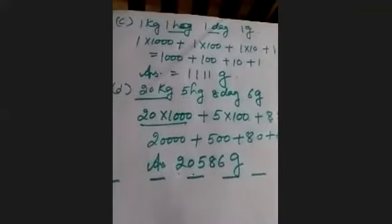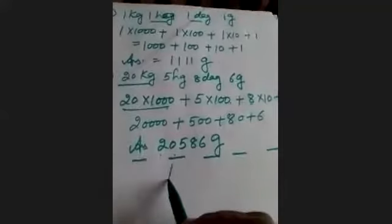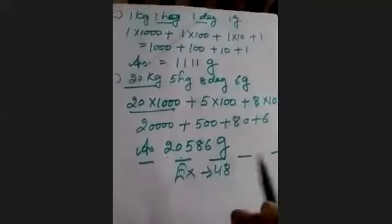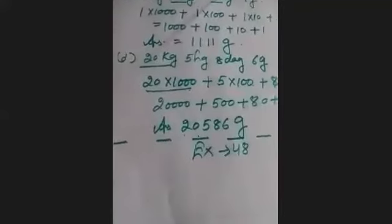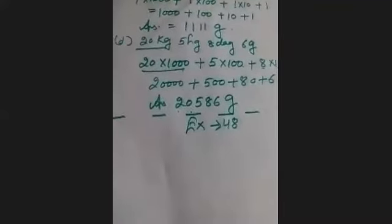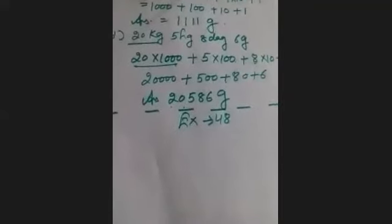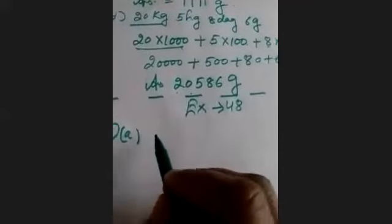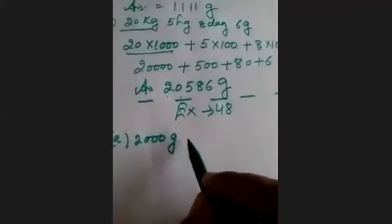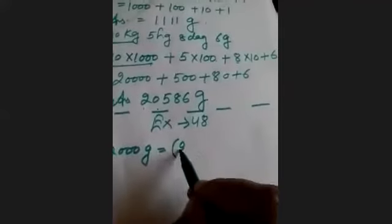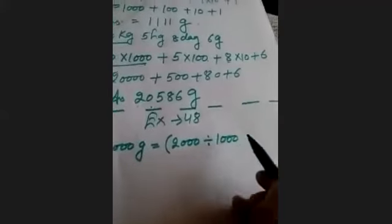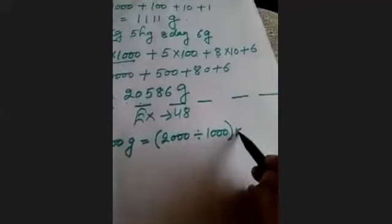Now we will discuss Exercise 48. First question: convert each of the following into kilograms — one has been done for you. In the first question we have parts A, B, C, and D. Part A is solved: 2000 grams ÷ 1000 = 2 kilograms. Now complete parts B, C, and D.